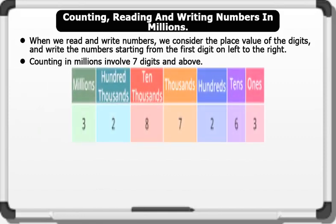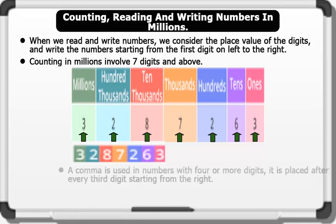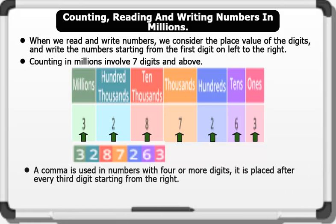Let's check out this example — placing the digits in a place value: 3 is placed in the millions column, 2 is placed in the hundreds of thousands column, 8 is placed in the tens of thousands column, 7 is placed in the thousands column, 2 is placed in the hundreds column, 6 is placed in the tens column, and 3 is placed in the ones column. This gives us three million two hundred and eighty seven thousand two hundred and sixty three.